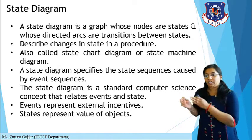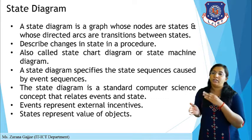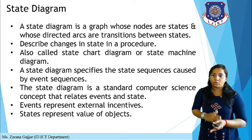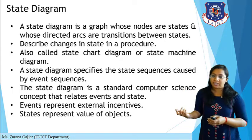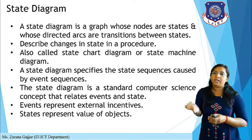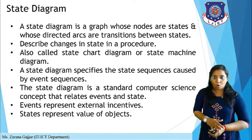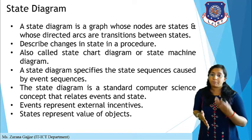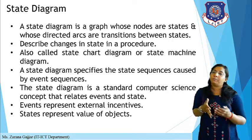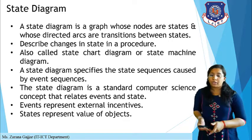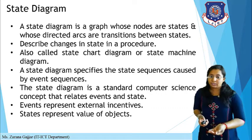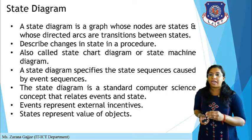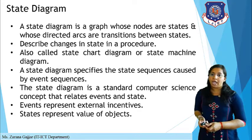What is the event and in which state that particular event occurs — that is defined in a state diagram. Here, events represent external incentives and states represent the value of an object. A state diagram represents what action is to be performed on occurrence of a particular event — what actions are performed at a particular event or time.